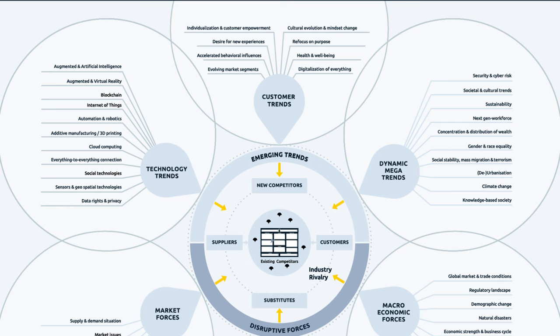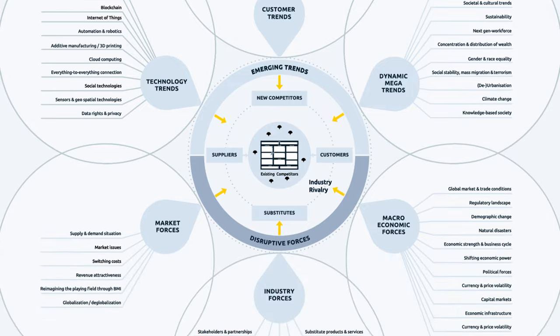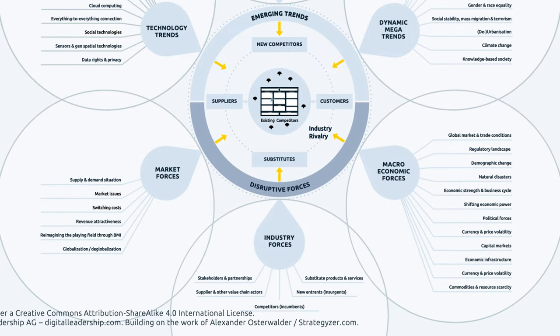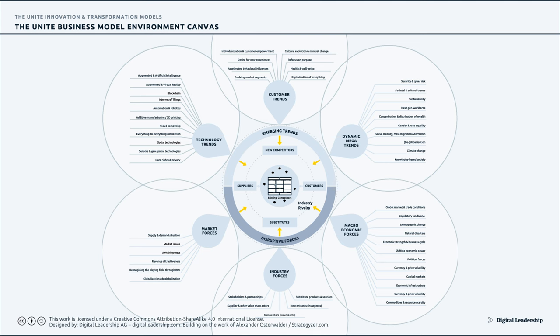The entire industry landscape is then influenced by emerging trends and disruptive forces. Emerging trends cover major trends which include technology trends, customer trends, and dynamic societal mega trends. Disruptive forces cover market forces, industry forces, as well as macroeconomic forces.